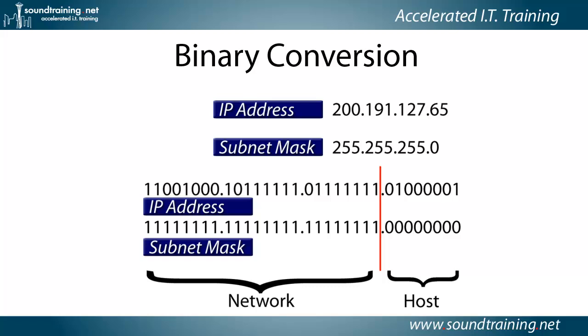So 255.255.255 — that's 3 octets each of 8 bits. 3 times 8 is 24, so there are 24 bits turned on in the mask. Do we see a correlation here? If the bits are turned on in the mask, the corresponding bits in the IP address are network bits. In this case, bits 1 through 24 are turned on in the mask.